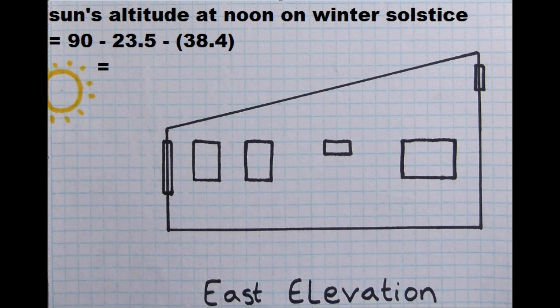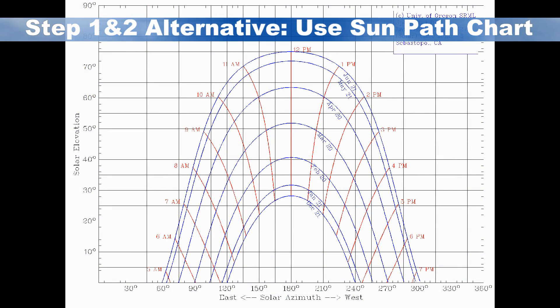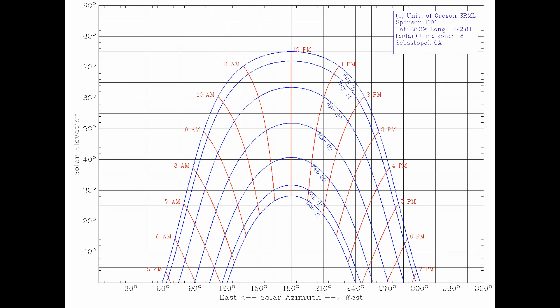A sun path chart is a graph that shows the path of the sun as it moves across the sky during a typical day in each month. The x-axis of the graph is the azimuth or the direction that the sun is from the observer. The y-axis is the sun's elevation or altitude.